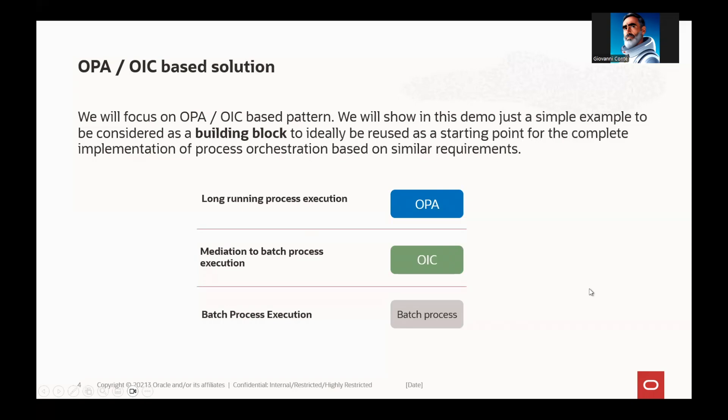The OPA-OIC based solution has OPA implementing the long-running process execution, with OIC doing the mediation to the batch processes, and the underlying batch processes — like an ODI process or any other custom batch process — through which OIC is interacting and getting the status via APIs, which is the simplest way. For more custom or legacy processes there could be a need to get the status from specific process database tables.